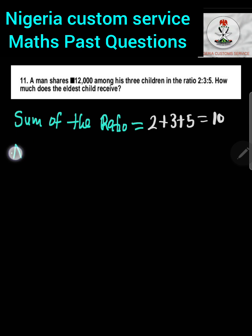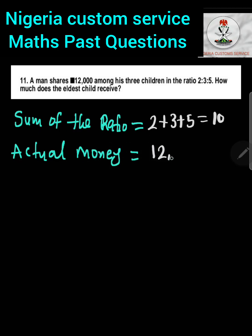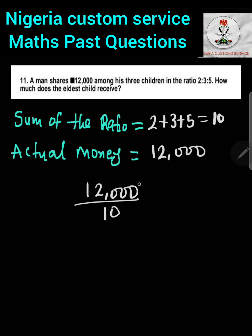The actual money the man shared is twelve thousand naira. The next thing we do is divide this actual money by the sum of the ratio. So we have twelve thousand naira divided by ten. Doing this division gives us one thousand two hundred, and this is what we will use to do the sharing.